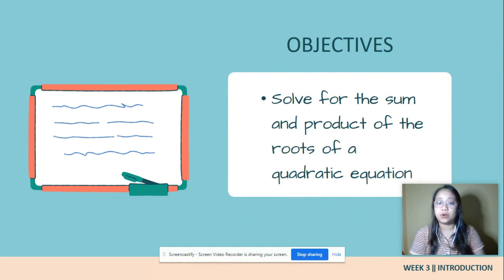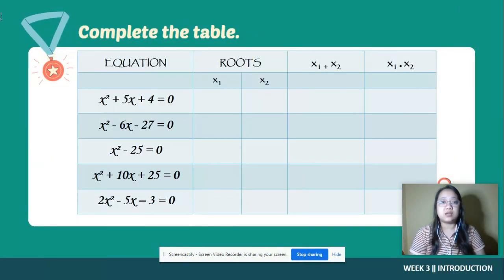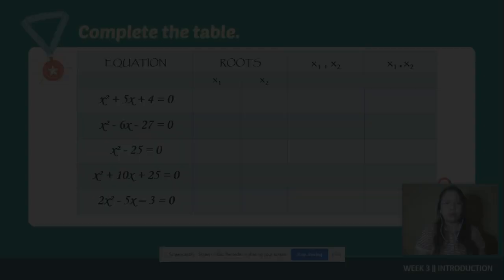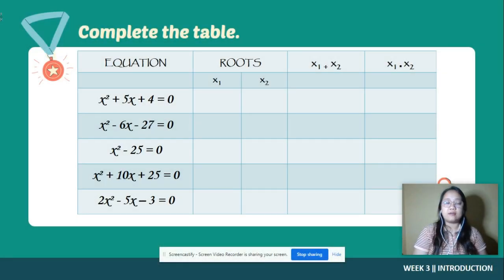Let us have this activity — we need to complete the table. Before we have the discussion, let us complete this table first. We are going to get the two values of x (the roots), we are going to get the sum of those roots, and we are also going to get the product.